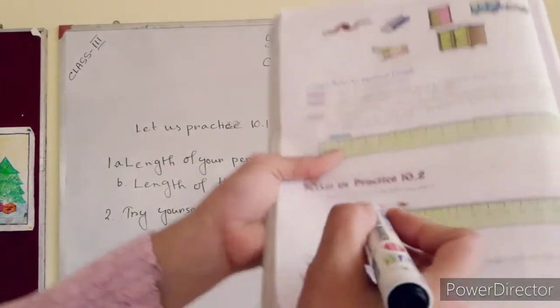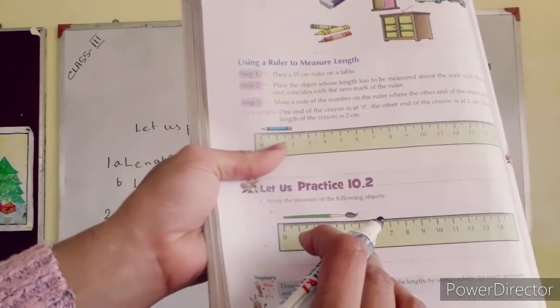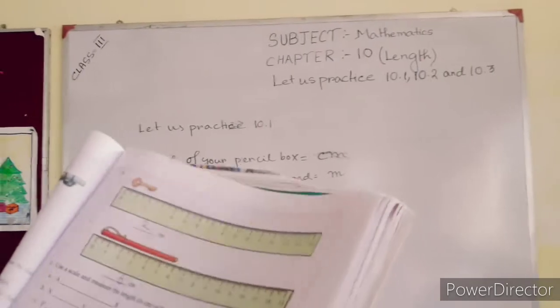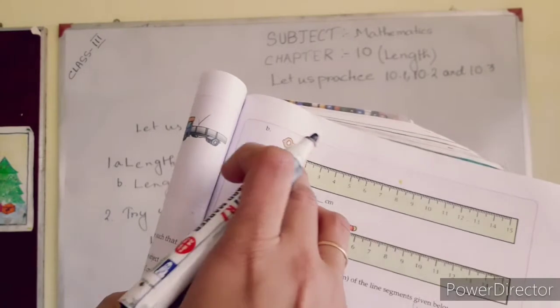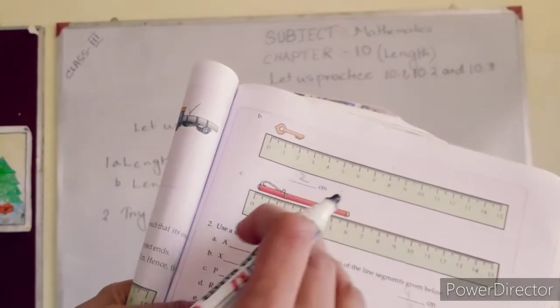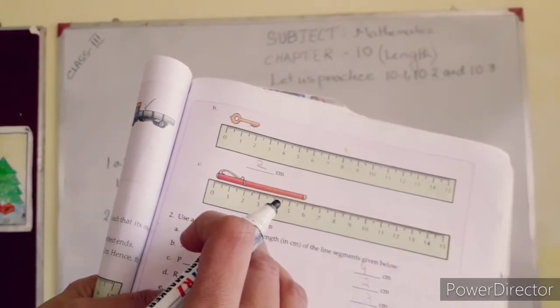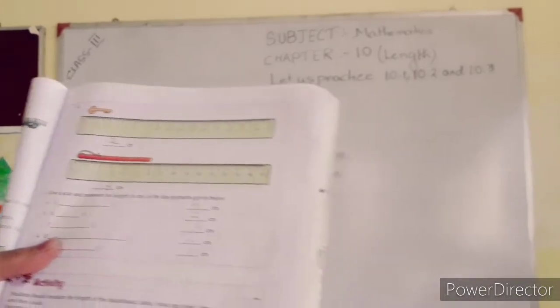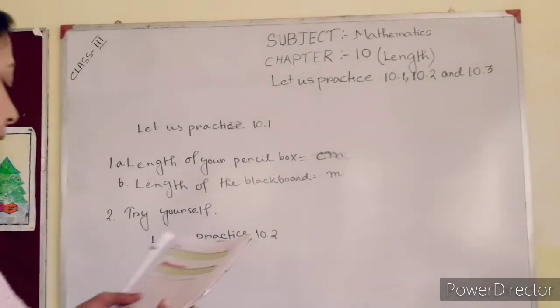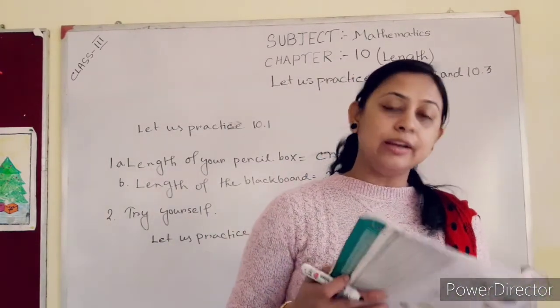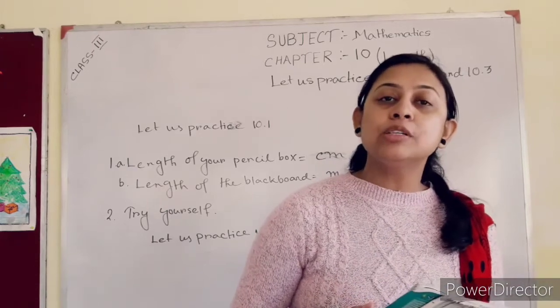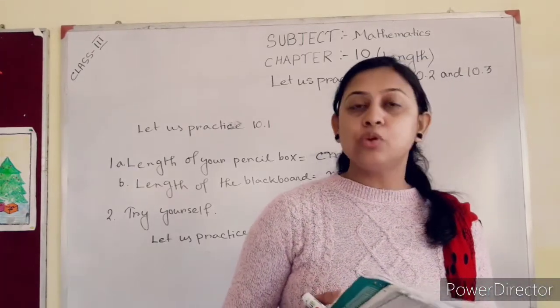You have to start from 0 and the length of this brush is 5 centimeters, so you will write 5 centimeter. In this way you will solve B and C: what is the length of the key, what is the length of the pen? First you measure using the scale, then you write the unit for each object. Number 2: use a scale and measure the length of the segment given — here is length AB, you have to measure using your scale. This portion you will try yourself.